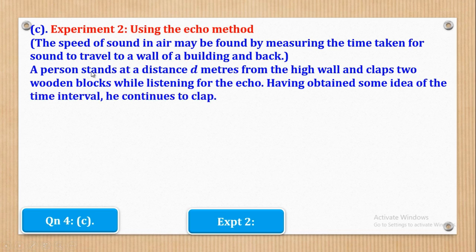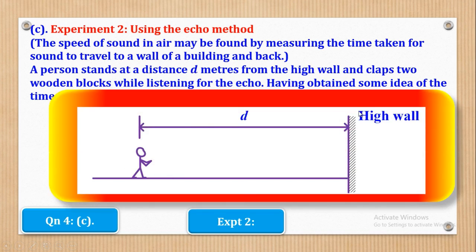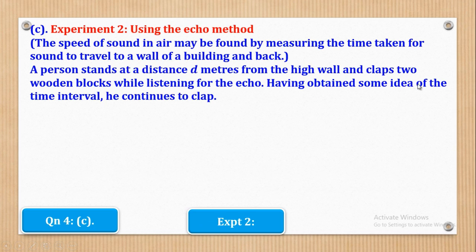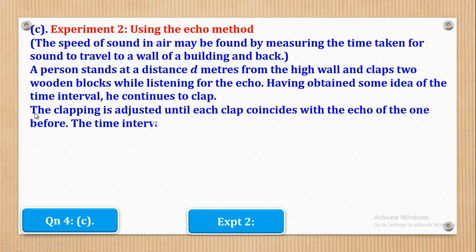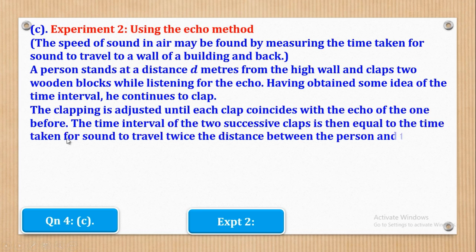A person stands at a distance D meters from a high wall and claps two wooden blocks while listening to the echo. This is the person and this is the high wall — the person stands at distance D from the high wall. Having obtained some idea of the time interval, he continues to clap. The clapping is adjusted until each clap coincides with the echo of the one before. The time interval between two successive claps then equals the time taken for sound to travel twice the distance D.